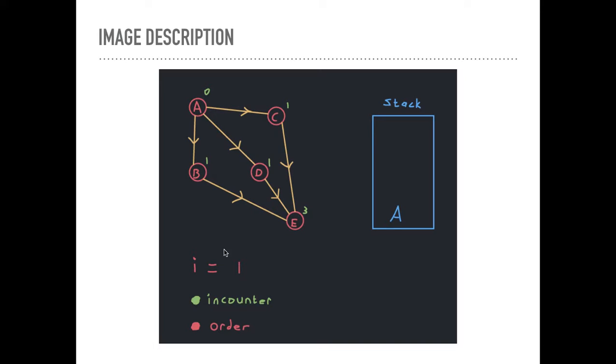So the next thing we're going to do is say if inCounter of U equals 0. So this is our start vertex. It has an inCounter of 0.